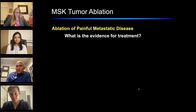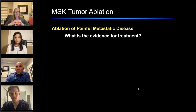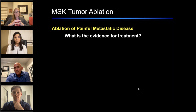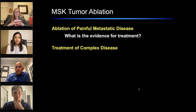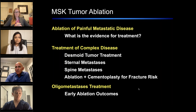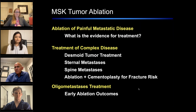We'll talk about MSK IR and ablation specifically from one perspective. Very little of this existed 15 years ago, so what you're seeing tonight are things that have evolved very quickly and continue to evolve. The examples I'll show in palliation of metastatic disease are born out of gaps in patient care. We'll cover desmoid tumor treatment, treatment of patients with metastatic and sternal metastases, a spine example with cementoplasty, and an emerging area: treating patients with limited or oligometastatic disease — a really great opportunity to extend patients' lives through ablation.